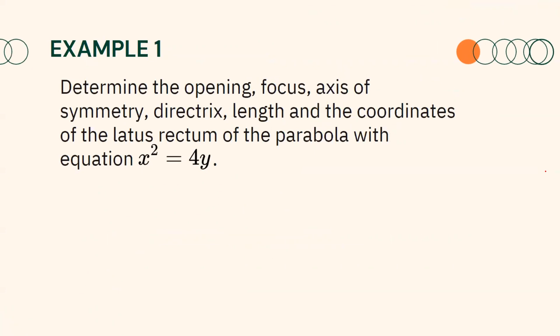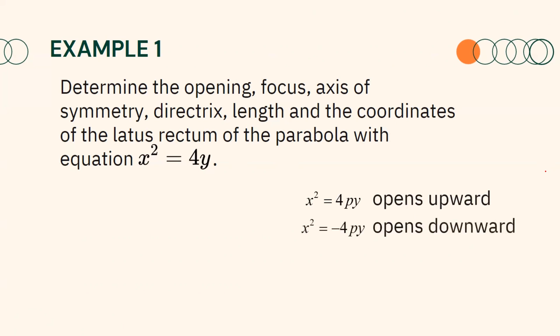Determine the opening, focus, axis of symmetry, directrix, length, and the coordinates of the latus rectum of the parabola with equation x² = 4y. Since the squared term is x, the parabola either opens upward or downward. Since 4p equals 4 and is positive, the parabola opens upward.